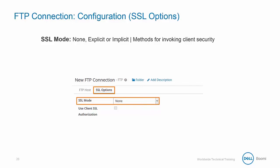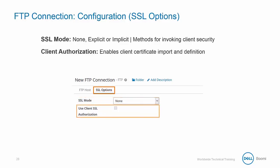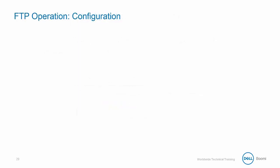First we have SSL mode, with options of selecting none, explicit, or implicit. These are the methods for invoking different types of client security, and basically enable the ability to support FTPS. Lastly, you have the use client authorization checkbox — if checked, this will enable the client certificate import and definition if the FTP administrator requires it. Now let's take a look at the configuration options for our operation.